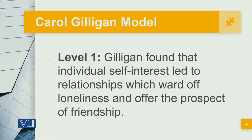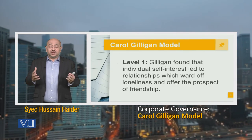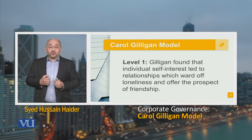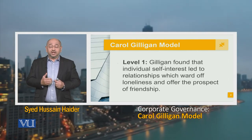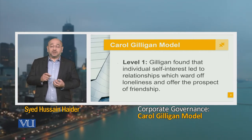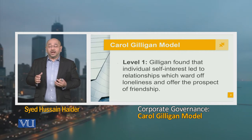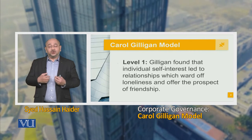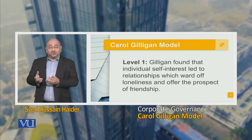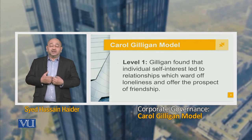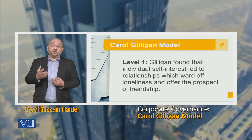At Level One of the Gilligan model, we see how relationships tend to ward off loneliness and create friendships. Human beings are social animals, and the worst state for a human being is to remain in isolation. In prisons, mischievous individuals placed in isolation wards after two weeks say they will not do anything wrong because they don't want to return to solitary confinement. As humans, we want to create friendships, relationships, care for people, and have people care for us.